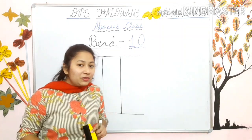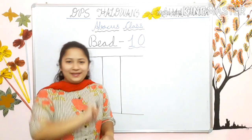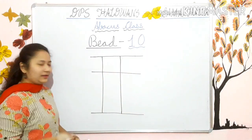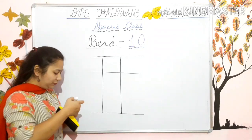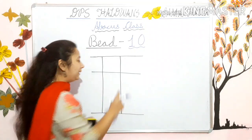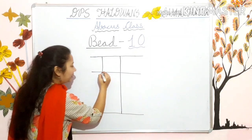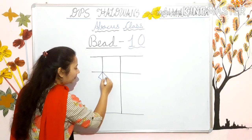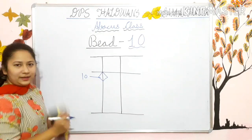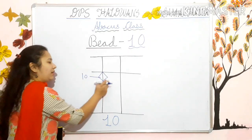Previously how many lines were you drawing? Pehle aap kitni line banate thei? One. Now today you have to draw two lines. Now what you have to do? You have to make the bead. Previously you were making the bead in this line — aap is line mein bead banate thei. Now today you will draw the bead in this line. And this is your bead ten. Yeh bead ten. This is what you have to draw.